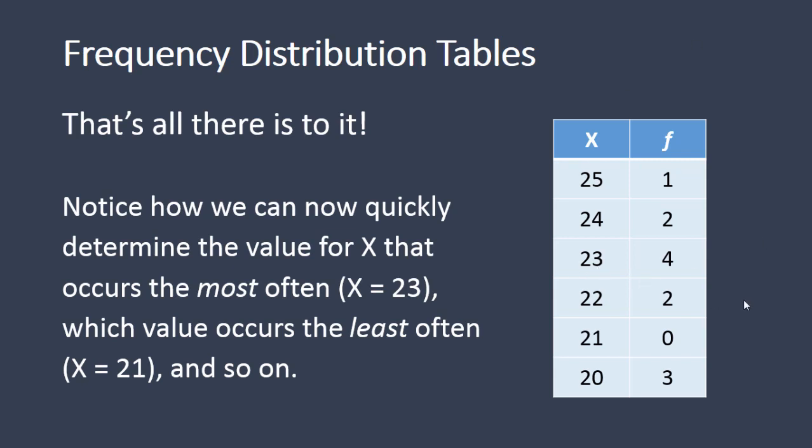The value that occurred the least often is 21, as it did not occur at all. That's it for creating frequency distribution tables. Thanks for watching.